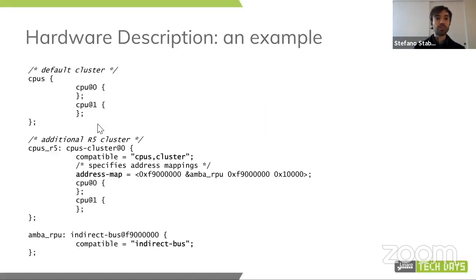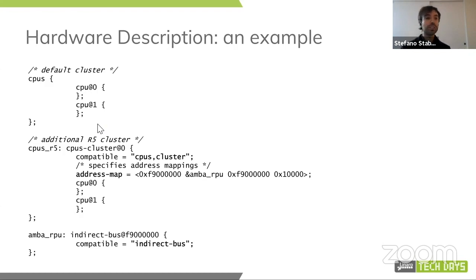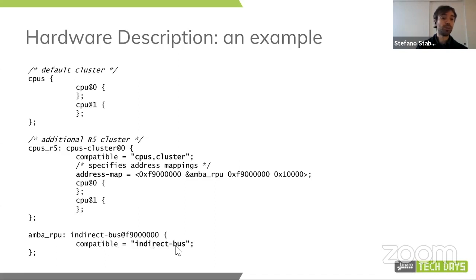Here's a concrete example. You have the usual default CPU cluster — say the Cortex-A cluster where Linux runs — and another cluster, a Cortex-R5 cluster with compatible string CPUs-cluster. Then there's an indirect bus that is only visible to the R5 cluster. To achieve this, we specify the bus as compatible with indirect bus, and explicitly map it into the Cortex-R cluster address space using the address map property. Because there is no address map property in the default cluster, the bus is not visible to the default cluster.